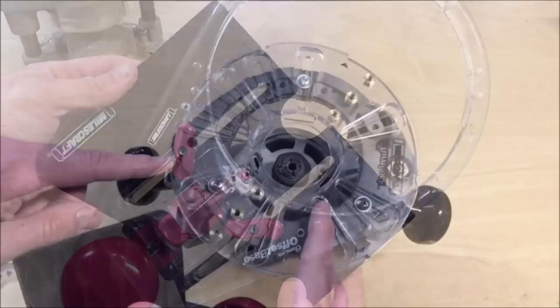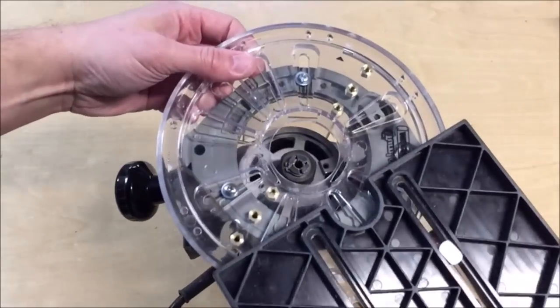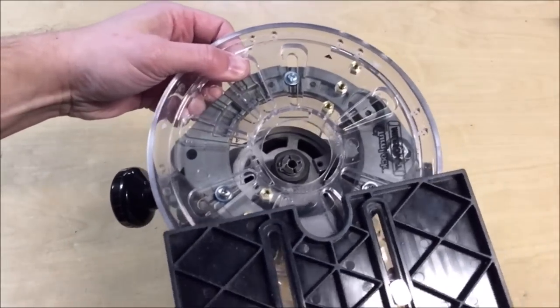Once you have the guide and base assembled, simply insert and rotate the offset base onto the turnlock base. Now you just have to set the distance and start routing.